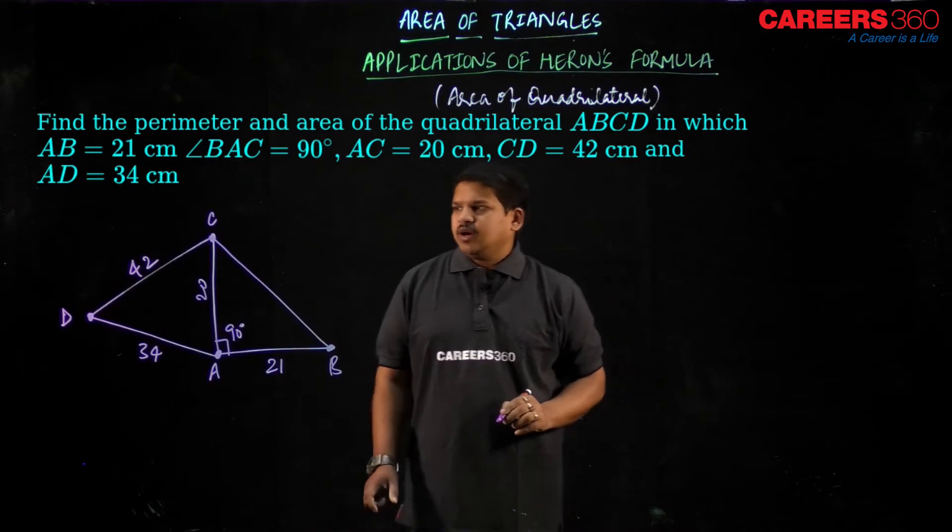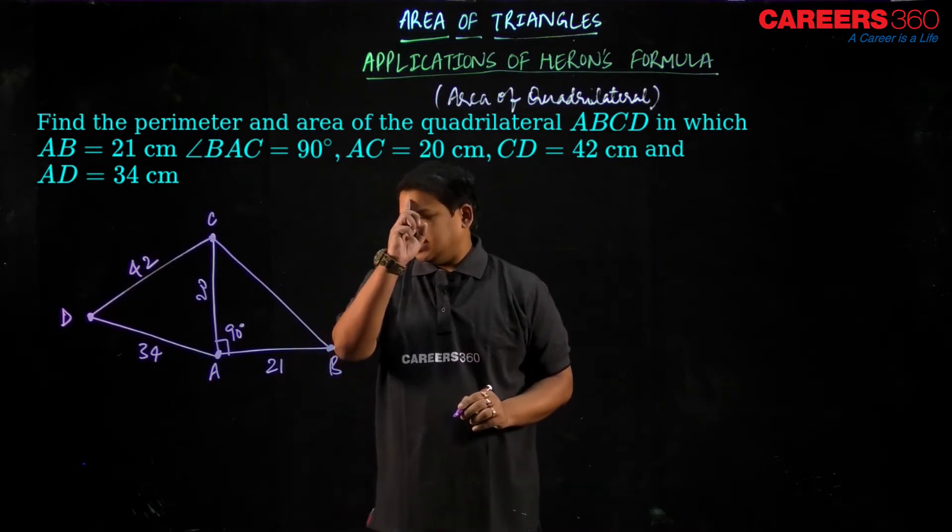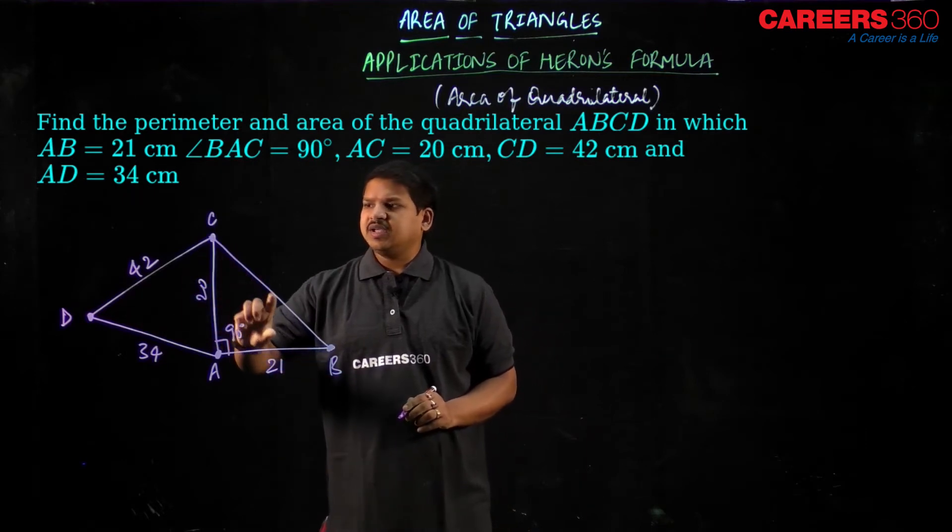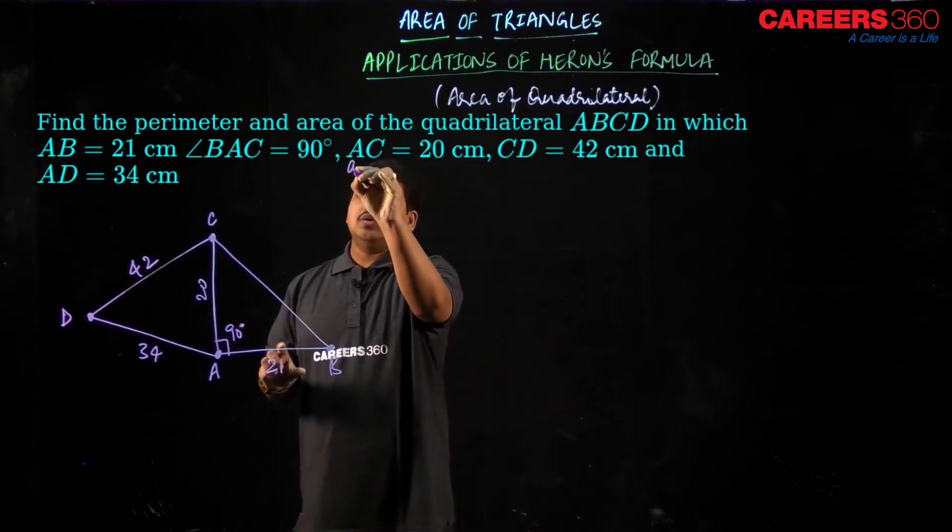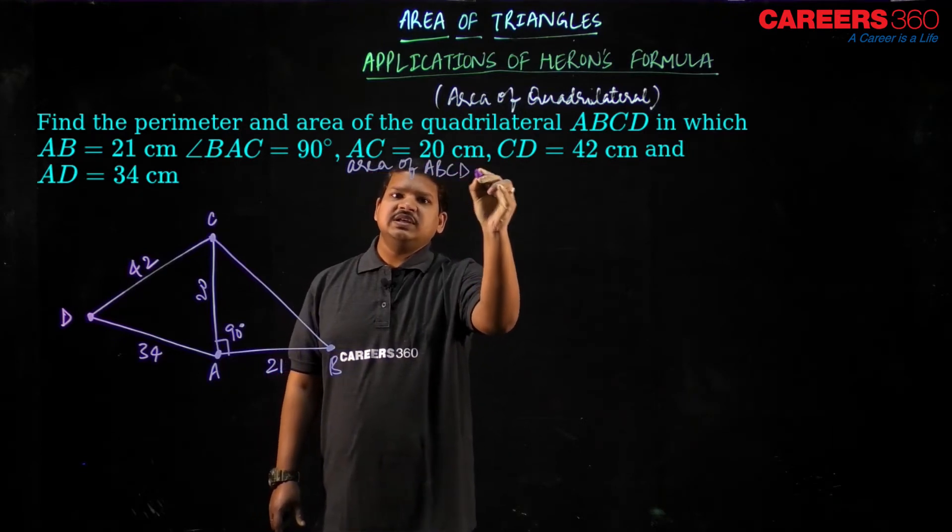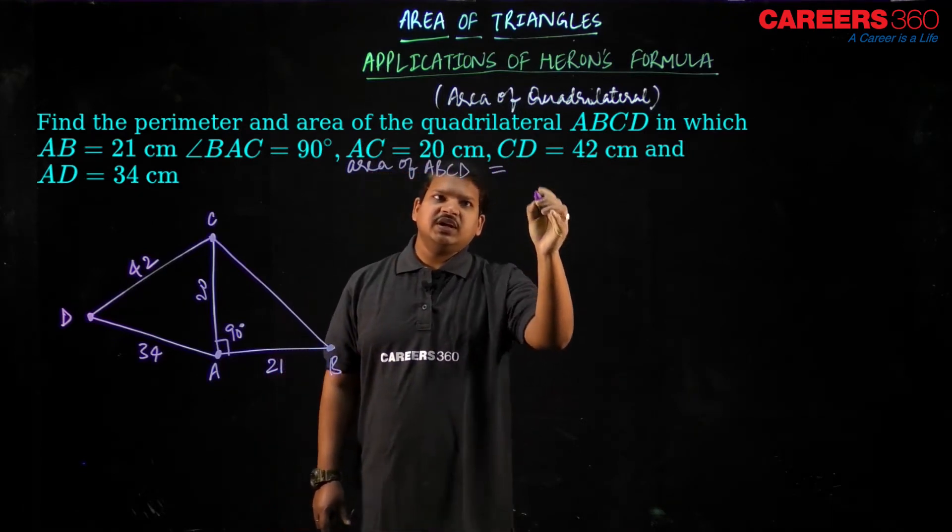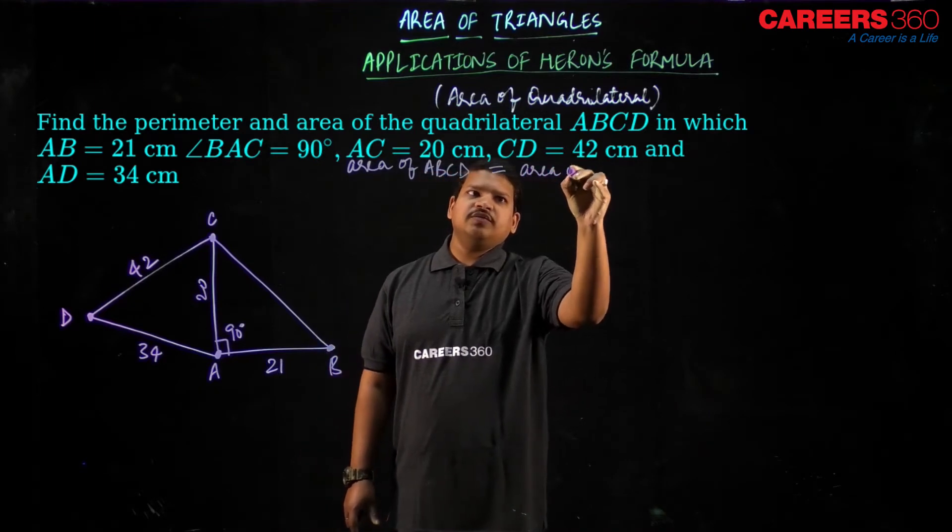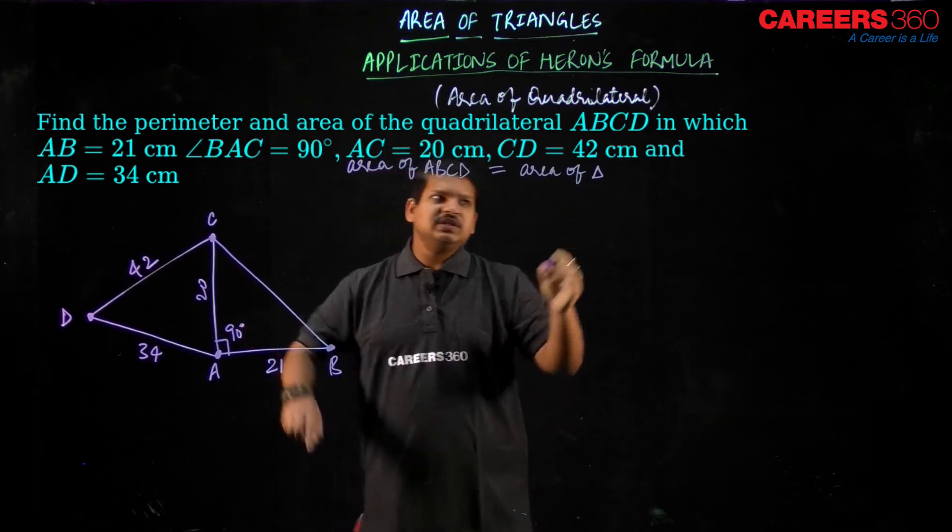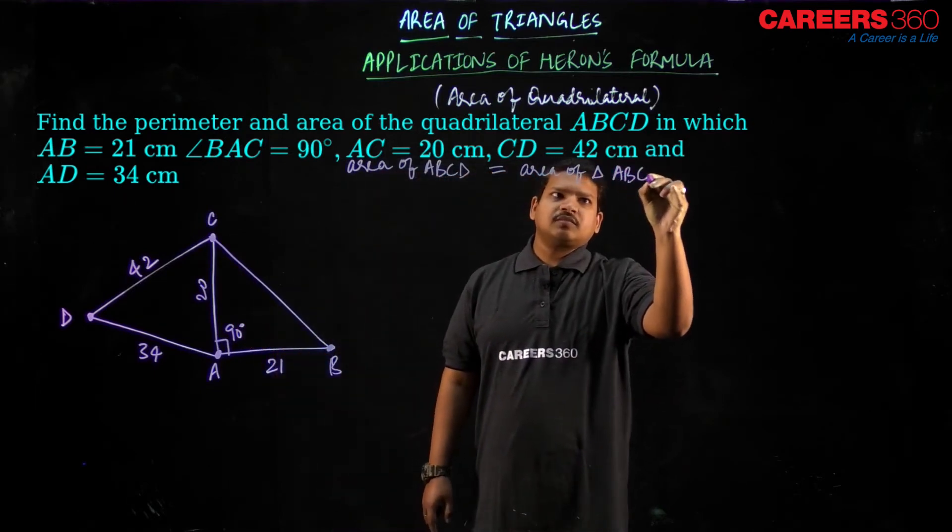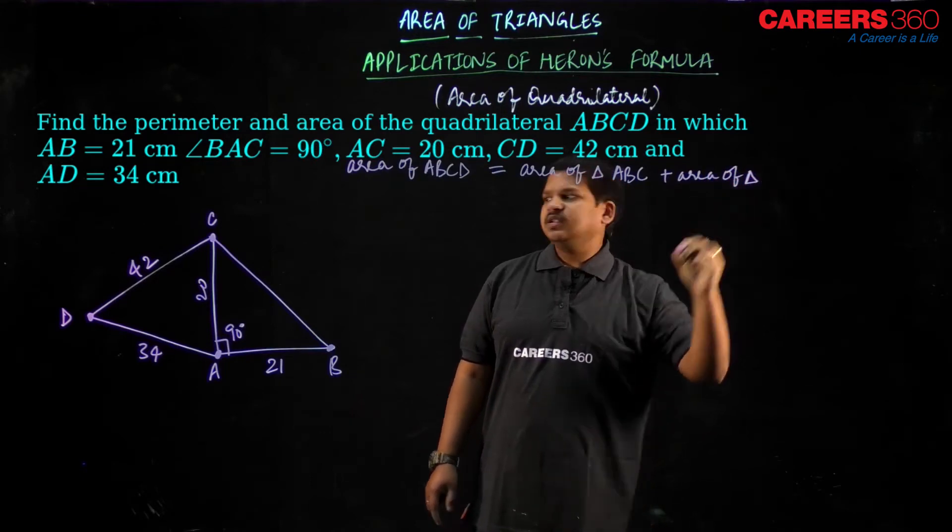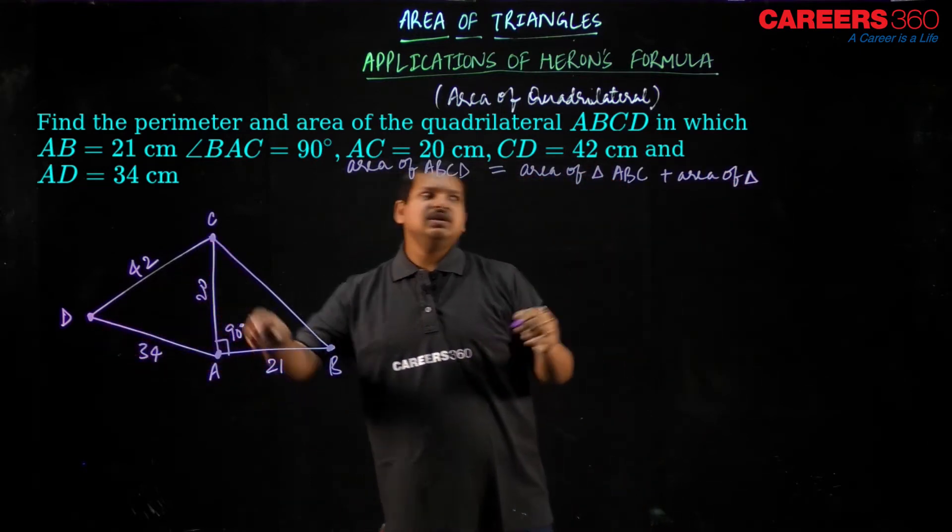Now I need to find out the area of this quadrilateral. As you can see this quadrilateral can be divided: area of ABCD can be written as area of triangle ABC plus area of triangle ADC right.